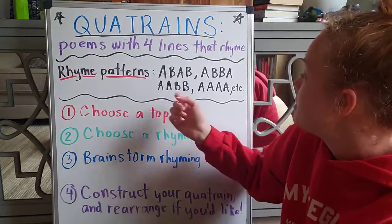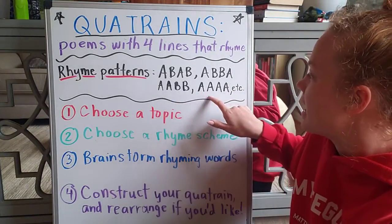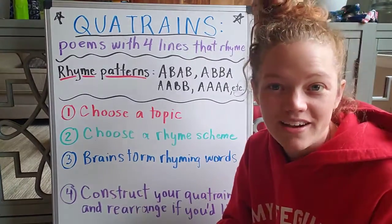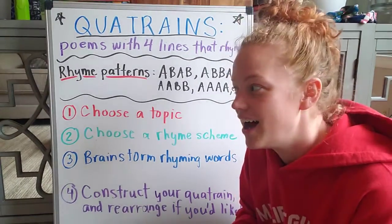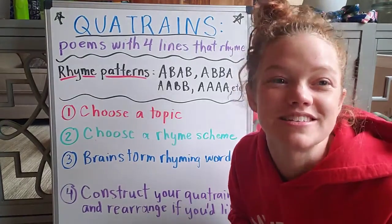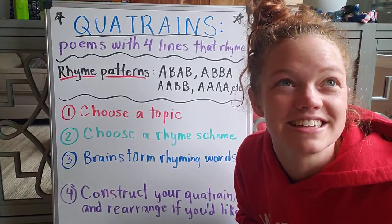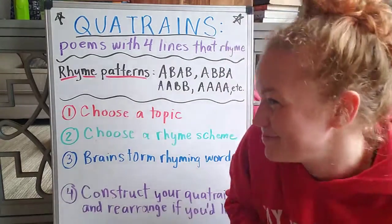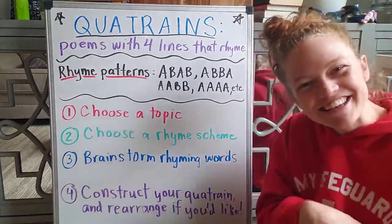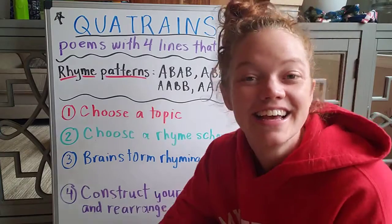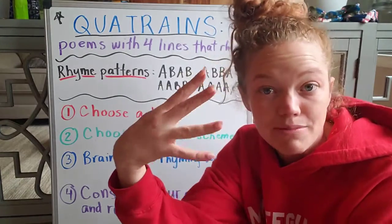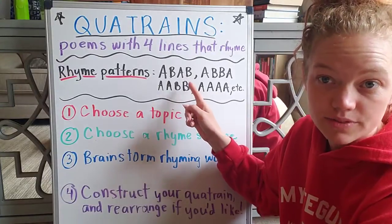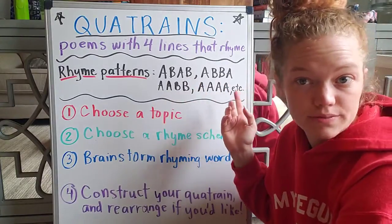It could be that all four lines rhyme — A, A, A, A. Like, 'my dog is Colby Bear, he has a lot of hair, he doesn't mean to stare, and oh no, he ate a pear.' Something goofy. I could have each of the lines rhyming with each other, or you could shake it up and have them stagger, like ABAB or ABBA.